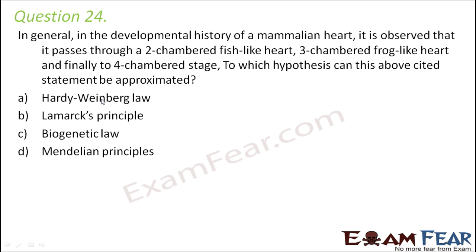Question number 24: in the developmental history of a mammalian heart, it is observed that it passes through a two-chambered fish-like heart, then a three-chambered frog-like heart, and finally to a four-chambered stage. To which hypothesis can this statement be approximated? During development, the mammalian heart first forms two chambers, then three, and finally four.